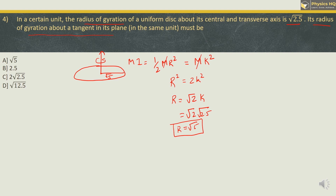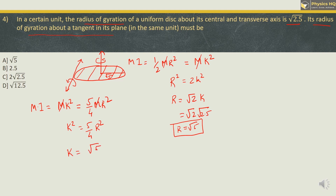We want to find the radius of gyration about a tangent in the plane of the disc. For this axis, moment of inertia is given by 5/4 mr squared. Writing this as mk squared and cancelling m, we get k squared equals 5/4 r squared, so k equals root of 5/4 into r. Substituting r equals root 5: k equals root(5) times root(5/4) equals root(25/4) equals 5/2, which is 2.5 units. So the answer is option B.